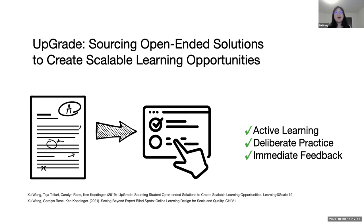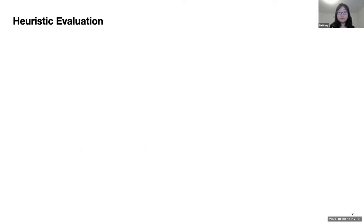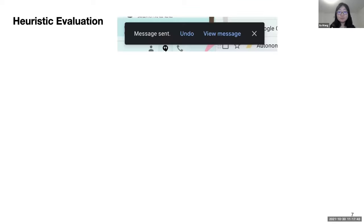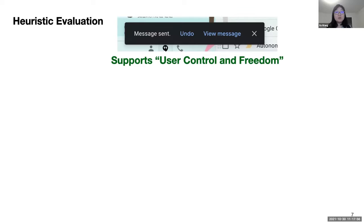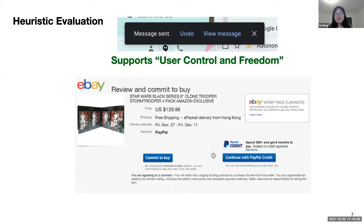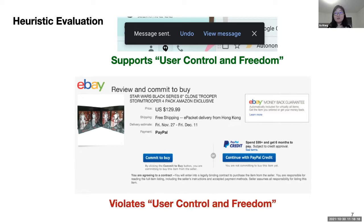I will introduce a system called UPGRADE that uses human AI collaborative methods to create high-quality multiple choice questions by leveraging existing students' written solutions. I'll explain how the technique works in the context of learning heuristic evaluation, a usability inspection method in user interface design. For example, in Gmail, after sending an email, you get an interface that says 'message sent' with an undo button — an example that supports user control and freedom. On eBay's purchase page, the only option is to buy with no way to shop more — an example that violates the rule of user control and freedom.